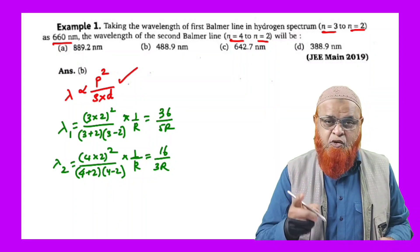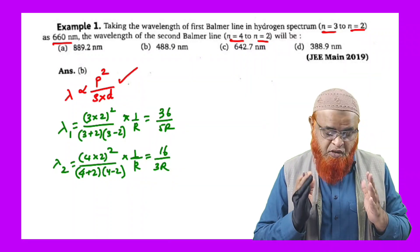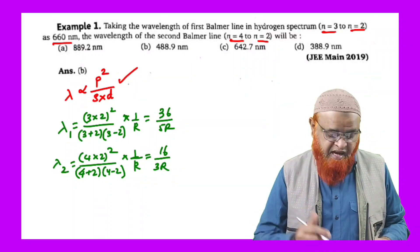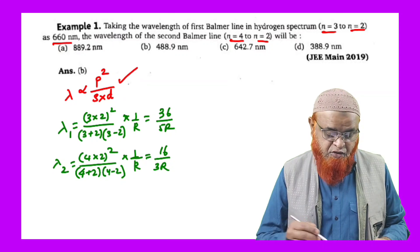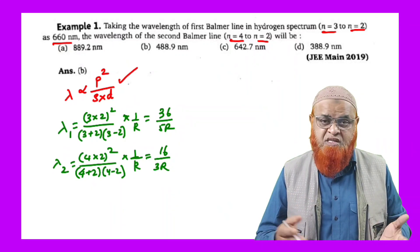So I have taken n equal to 3, n equal to 2. I have written 3 into 2 whole square by sum, that is 3 plus 2, into 3 minus 2. And for the another wavelength, I have taken 4 into 2 whole square by 4 plus 2 into 4 minus 2, that is sum and difference.